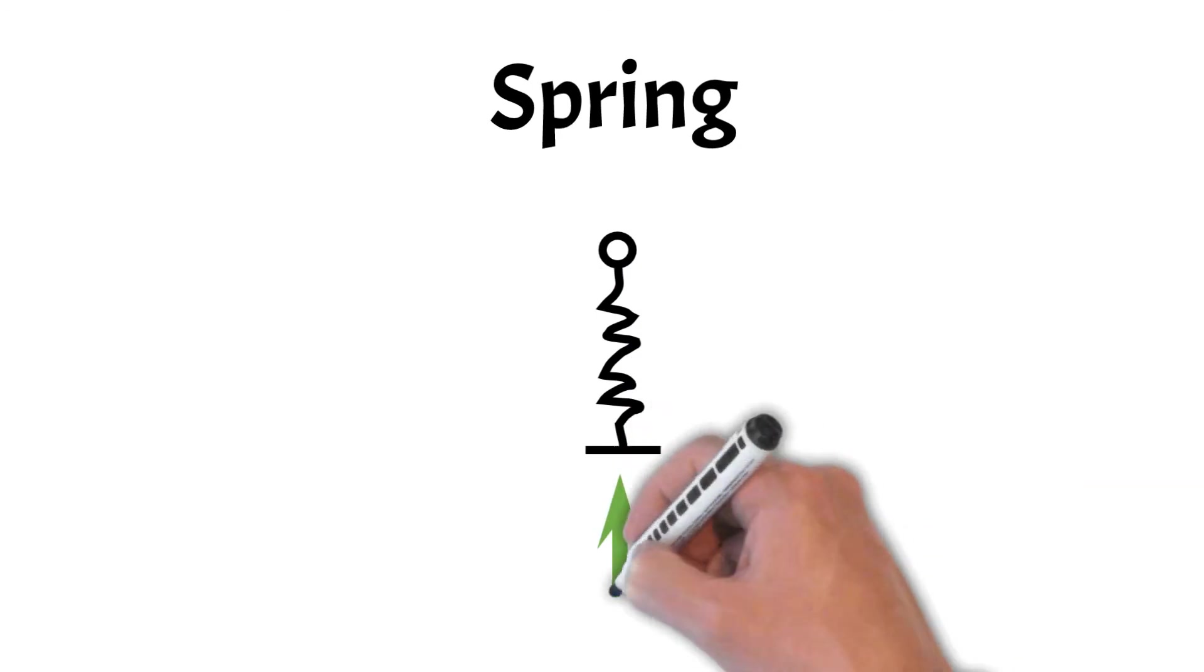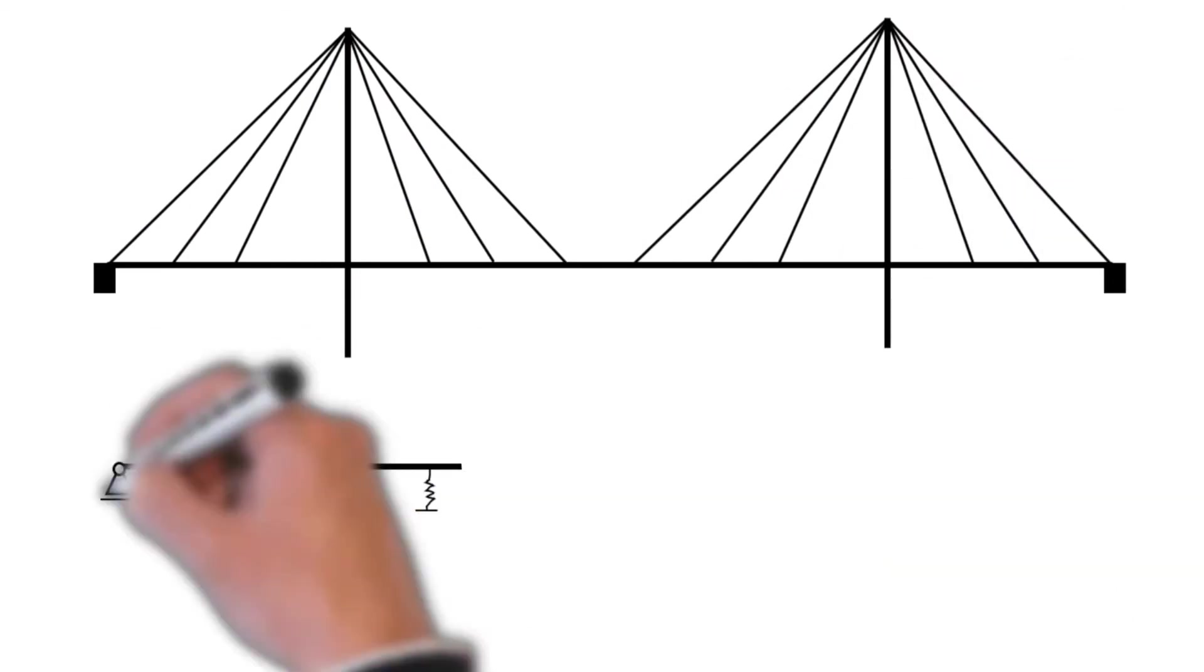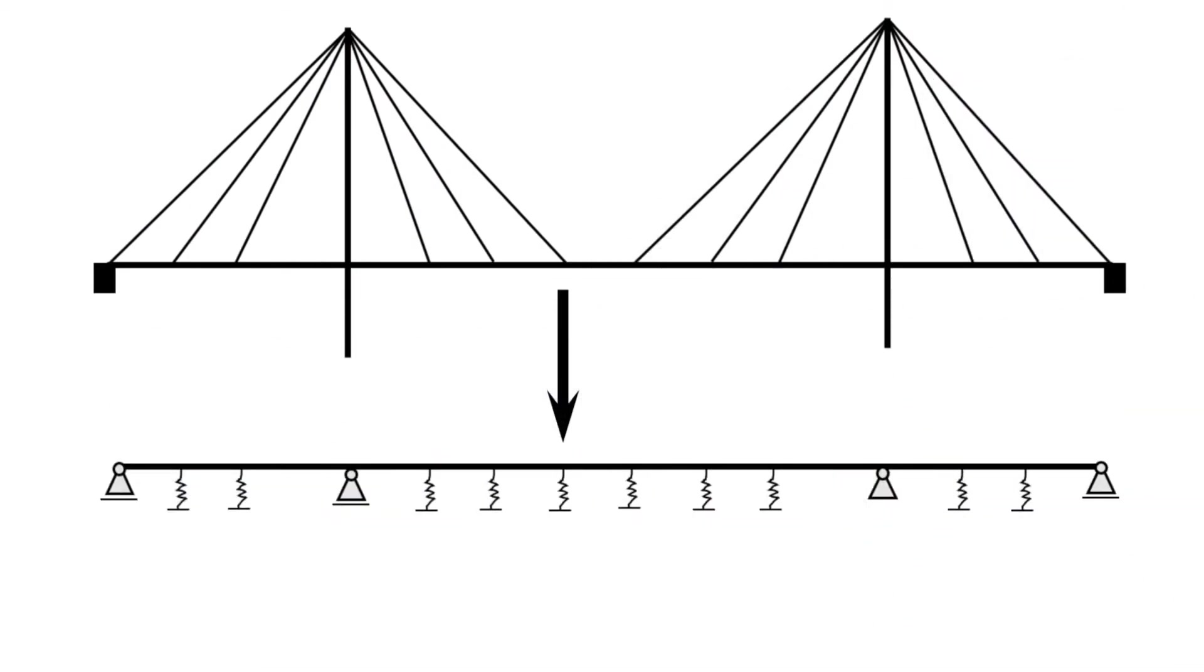The last support type we cover in this video are spring supports. Springs have one or more reaction forces. In the example of a cable-stayed bridge, the spring support behaves similar to a roller support. The main difference is that the spring support lets the deck deflect and the roller doesn't.